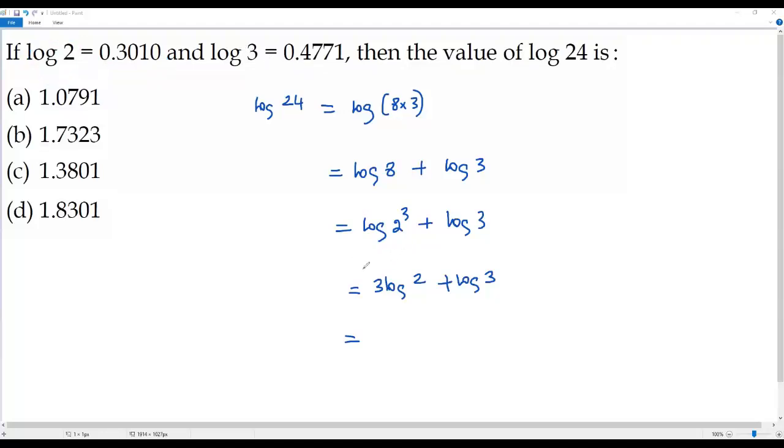Let's plug in 0.3010 for log 2. Then I will be getting 3 times 0.3010 plus, for log 3 we have 0.4771.